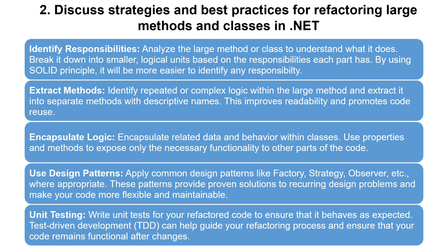Now let's discuss strategies and best practices for refactoring large methods and classes in .NET. First, analyze the large method or class to understand what it does and break it down into smaller logical units based on the responsibilities each part has. Using the SOLID principles makes it easier to identify each responsibility — I've made a complete video on SOLID principles you can watch. Next, identify repeated or complex logic within the large method and extract it into separate methods with descriptive names; this improves readability and promotes code reuse.